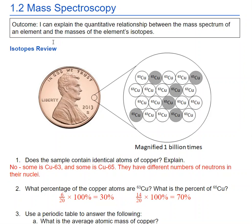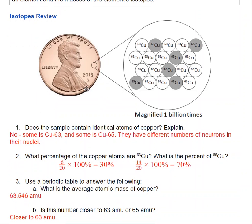Okay, 1.2 is mass spectroscopy. The outcome is I can explain the quantitative relationship between the mass spectrum of an element and the masses of the element's isotopes. So let's start out with just a little bit of review of isotopes here.